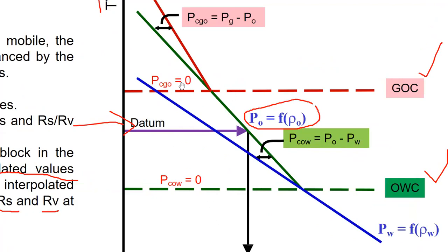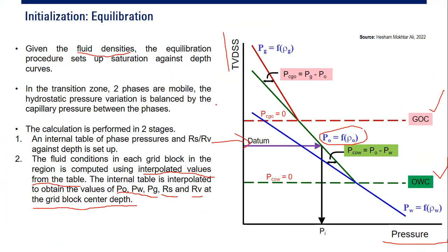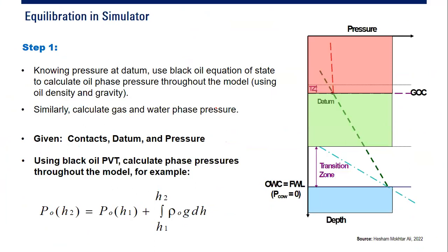At the gas-oil contact, capillary pressure is zero. At the oil-water contact, capillary pressure is also zero. In the transition zone, we have capillary pressure: for the oil-water system it is oil pressure minus water pressure, and for the gas-oil system it is gas pressure minus oil pressure. Capillary pressure is used for the transition zone calculation.